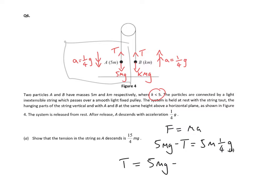And if we just rearrange, we do 5MG take away 5 quarters MG. And that leaves us with 15 quarters MG, which is the answer.